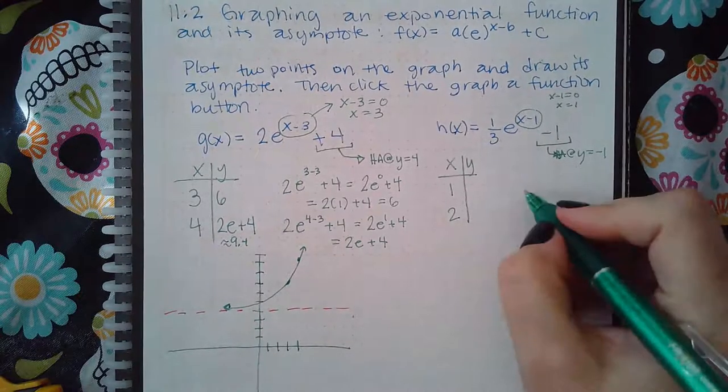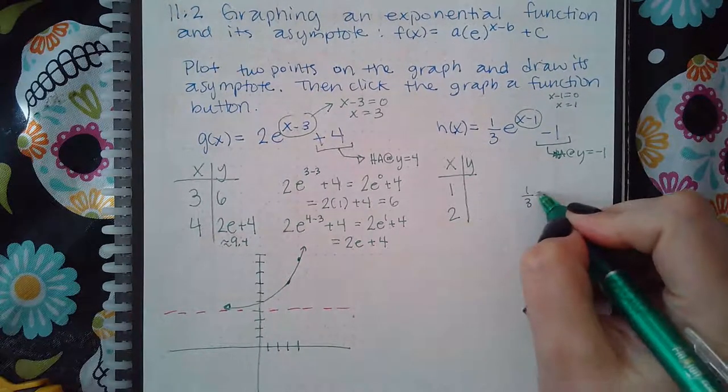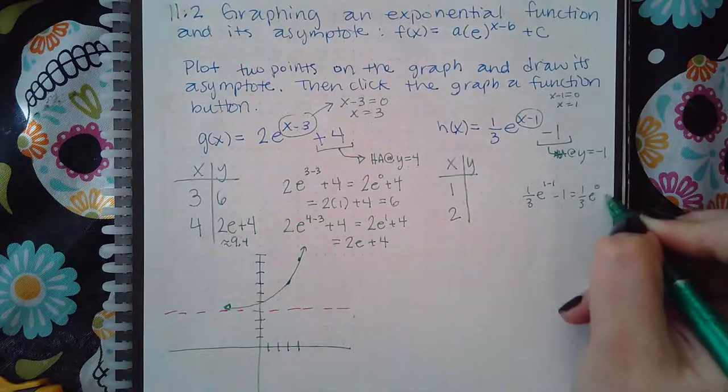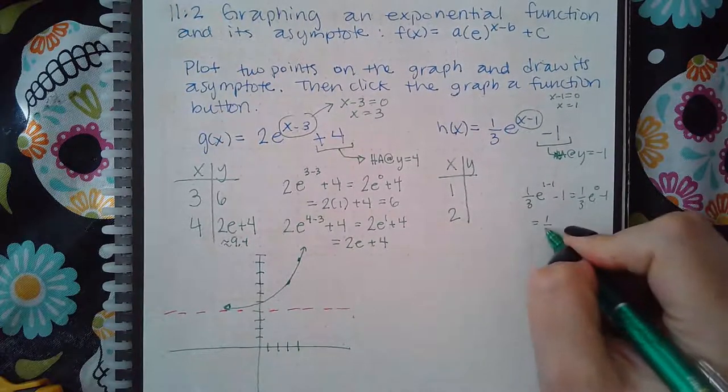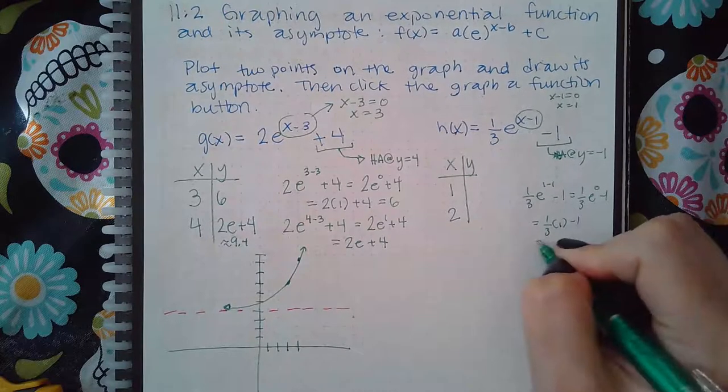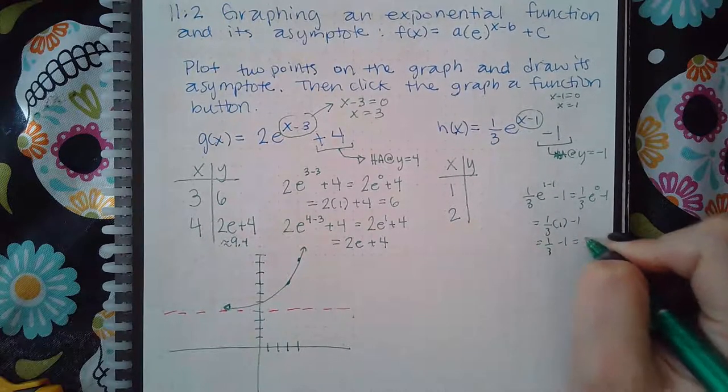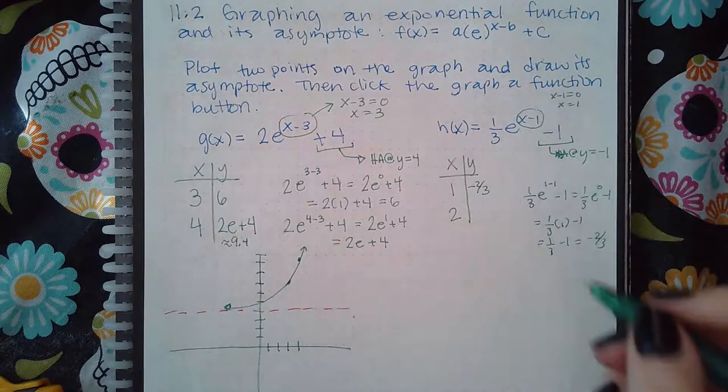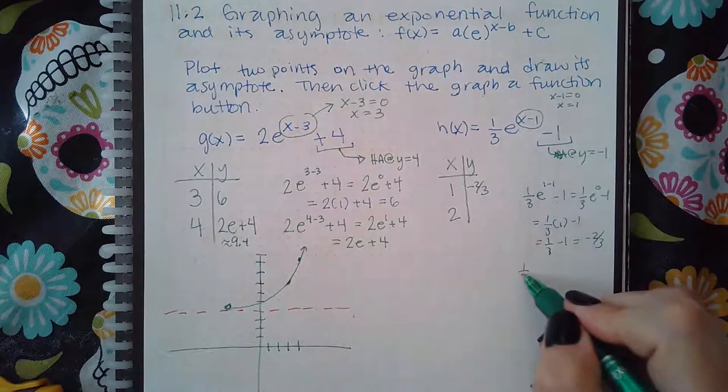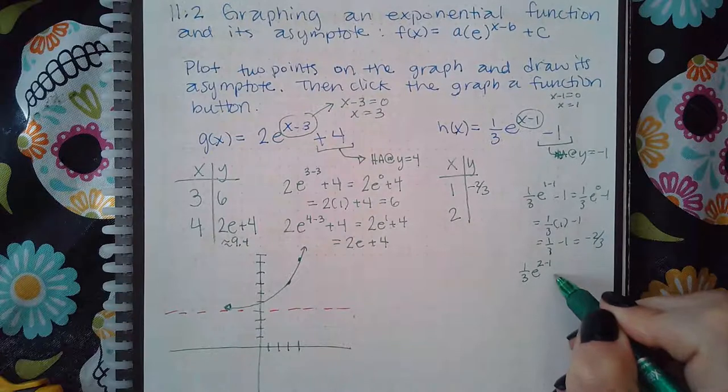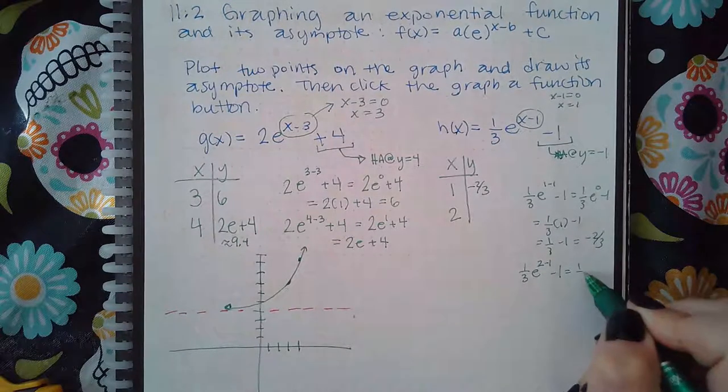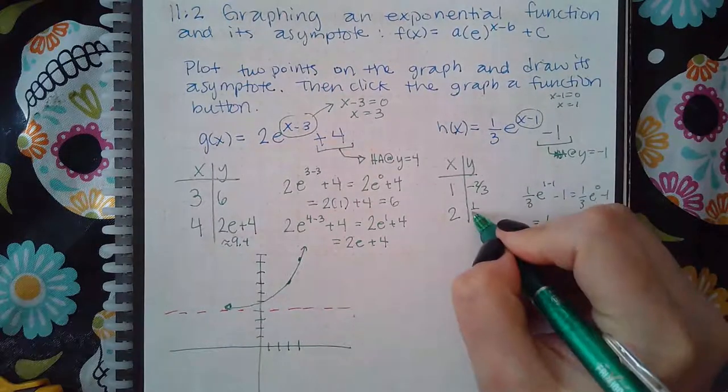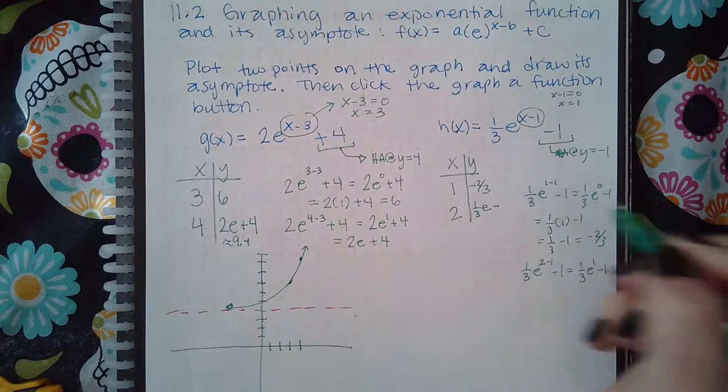And then you have to even fill out the chart manually. So one third e to the one minus one is one third e to the zero, which is one third times one, one third minus one, negative two thirds. And so that you can put in the computer. And then one third e to the two minus one, so you get one third e to the one, so it just looks like one third e minus one.